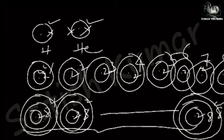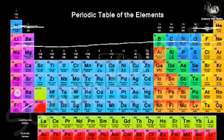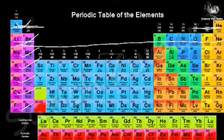In similar fashion, the fourth period elements have 4 shells, the fifth period elements have 5 shells, the sixth period elements have 6 shells, and the seventh period elements have 7 shells. So the periods are based on how many shells the elements have.